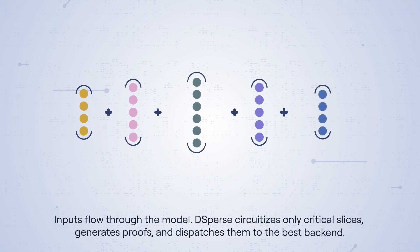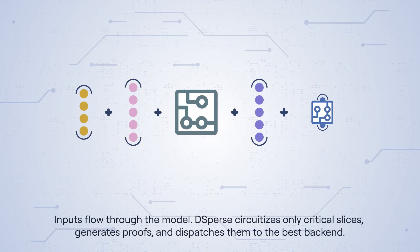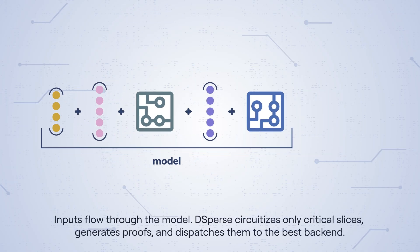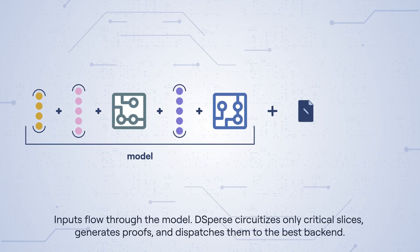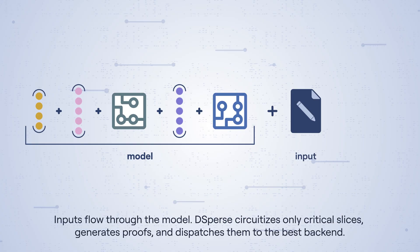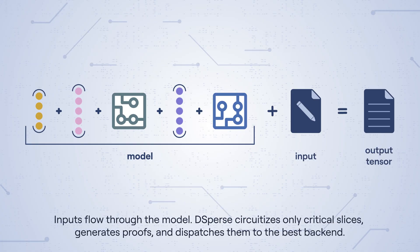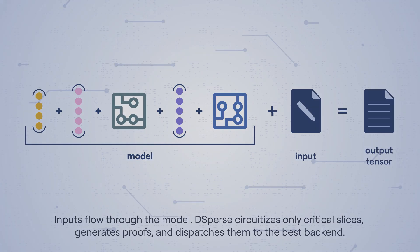Inputs flow through the model. D-Sperse circuitizes only critical slices, generates proofs, and dispatches them to the best back-end.